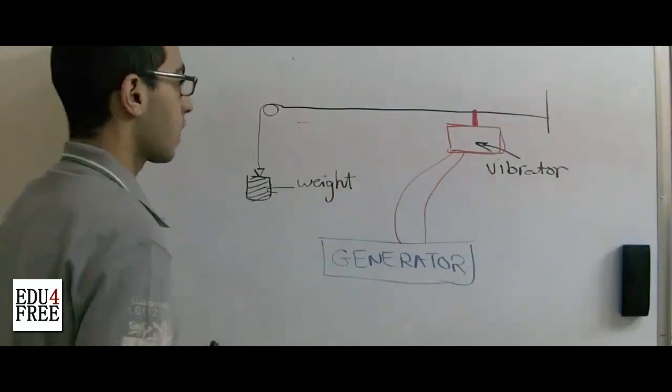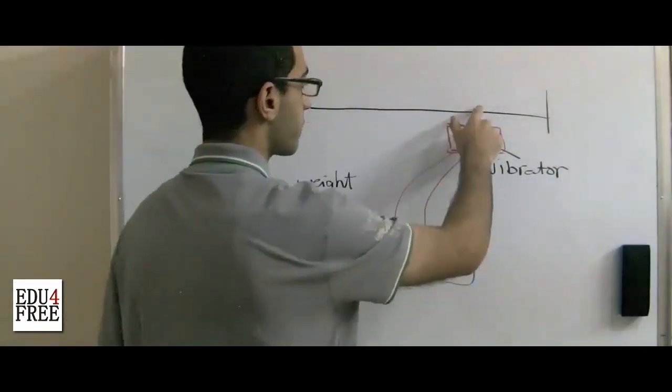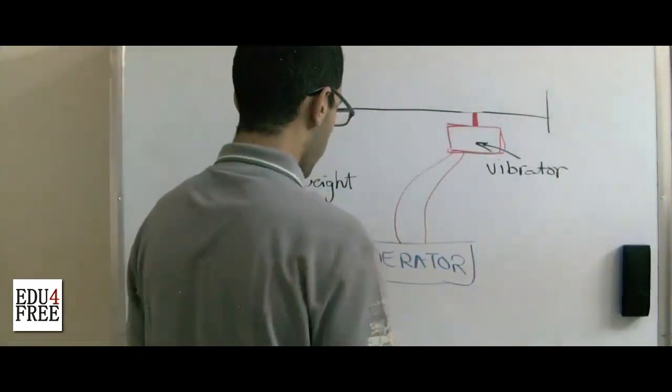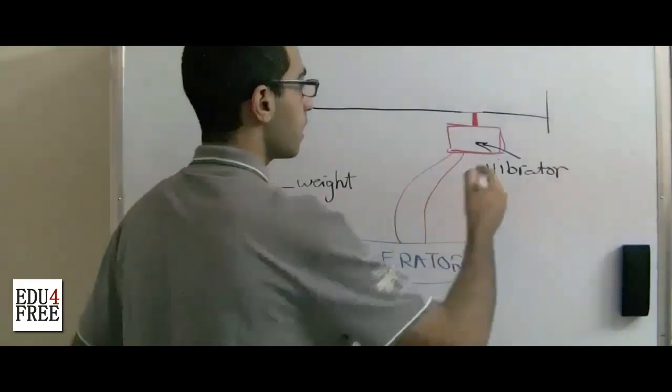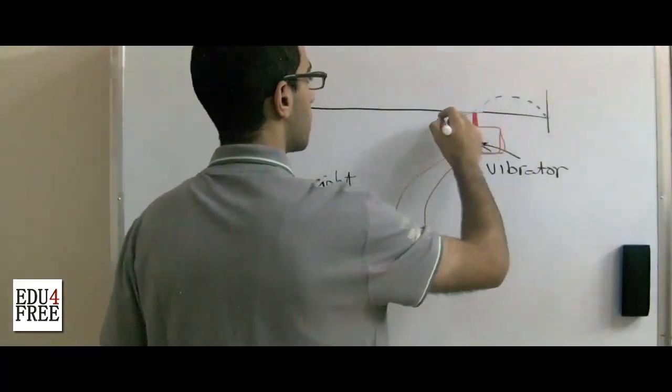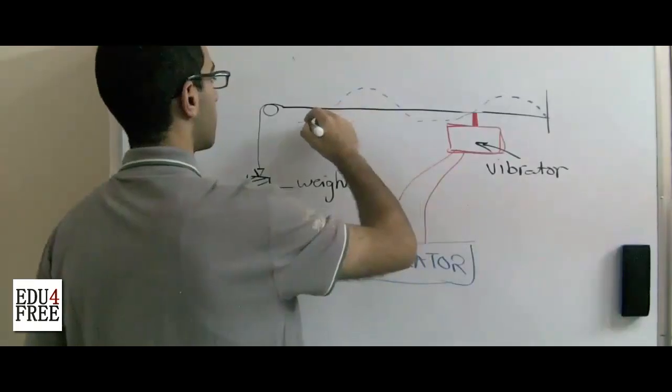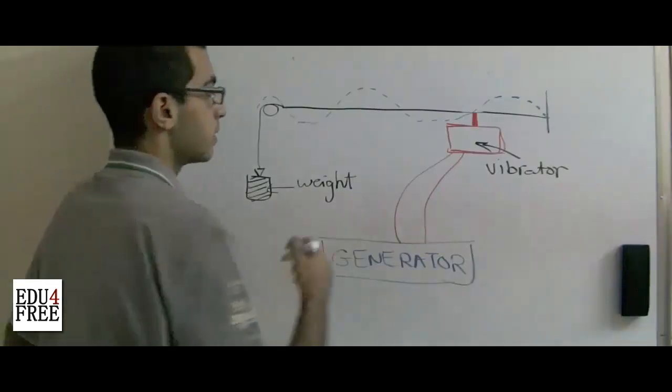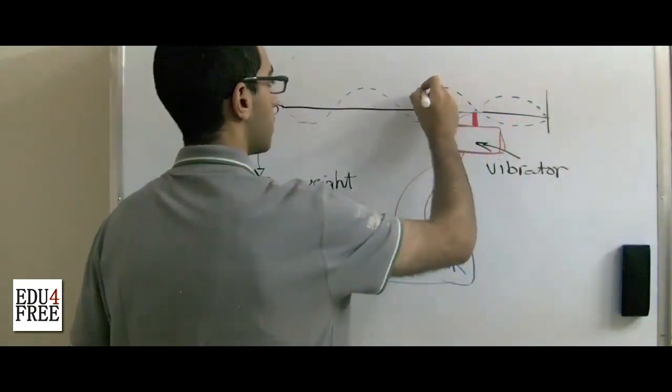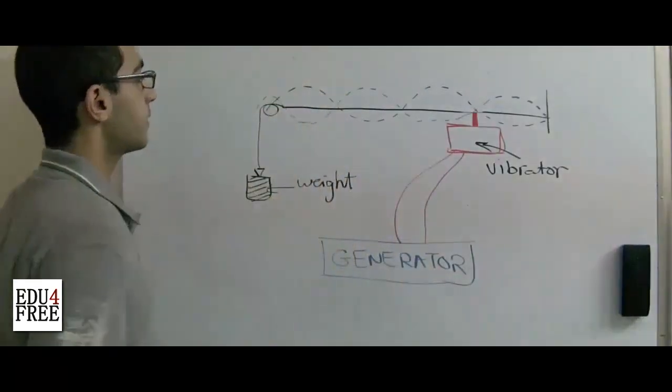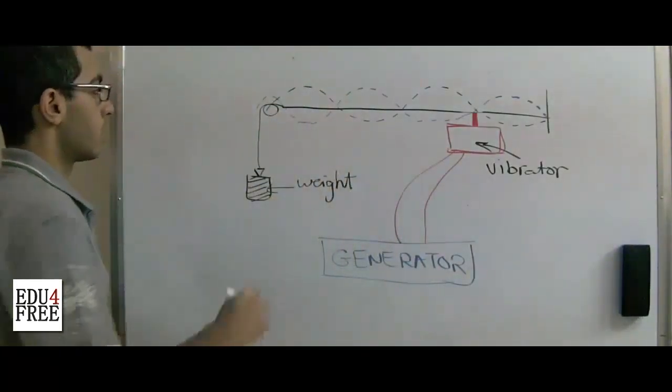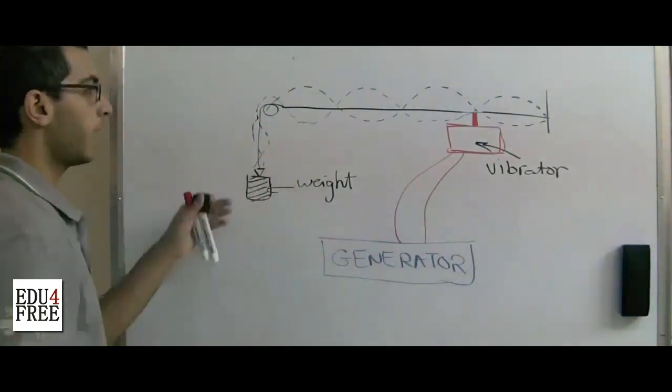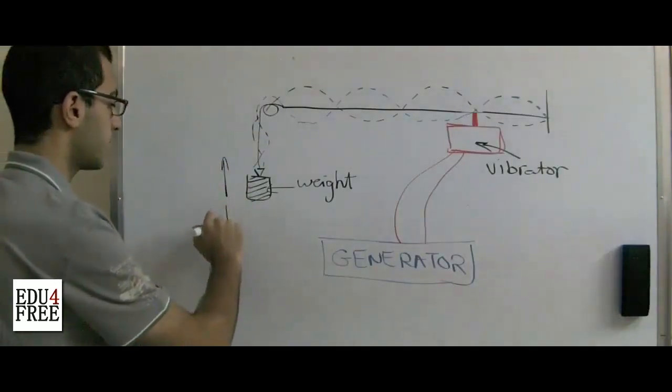So when this vibrator works, the vibrations are transmitted to the rope so that the rope makes some standing waves. These waves move till they reach the weight, and the weight moves up and down.